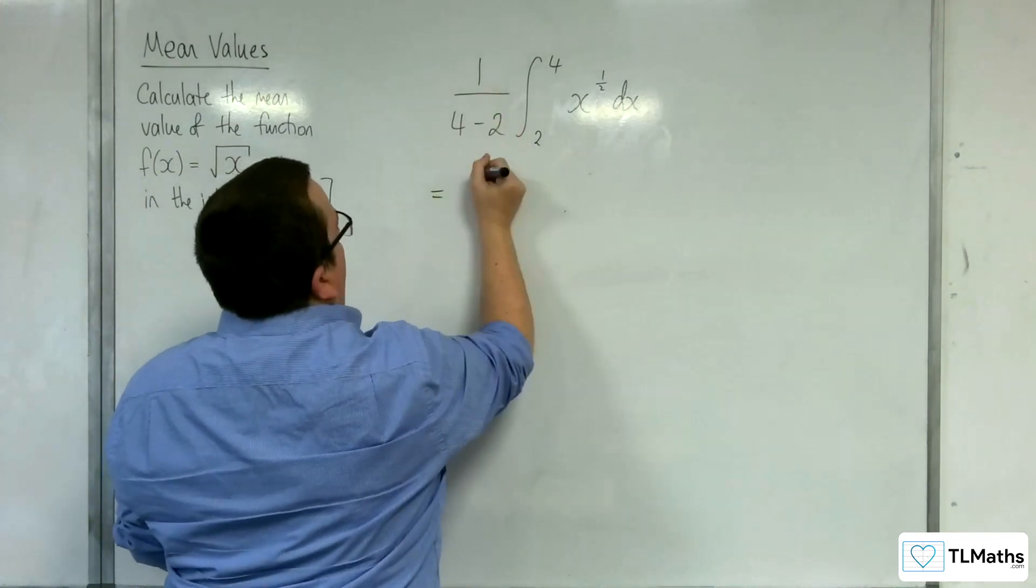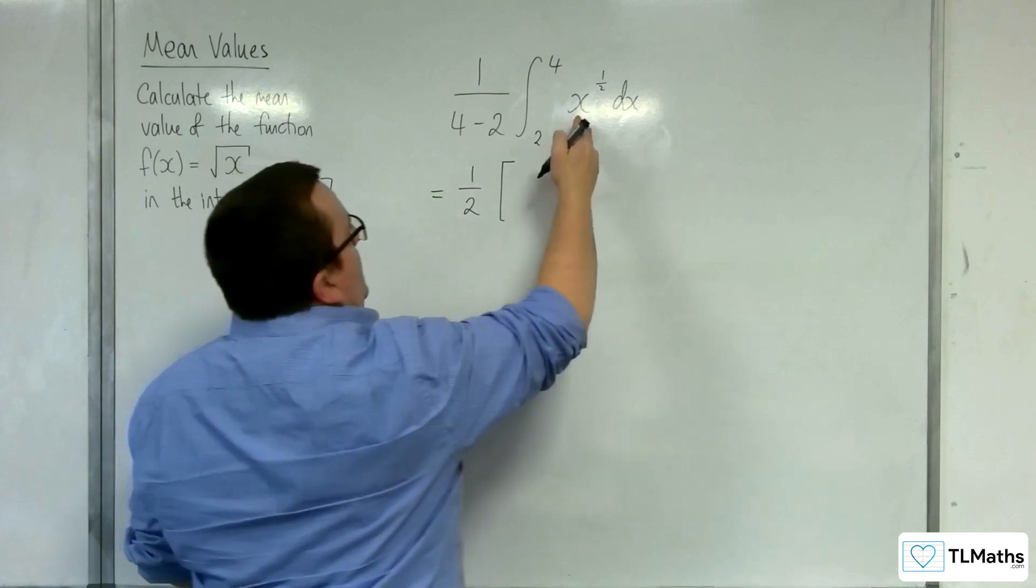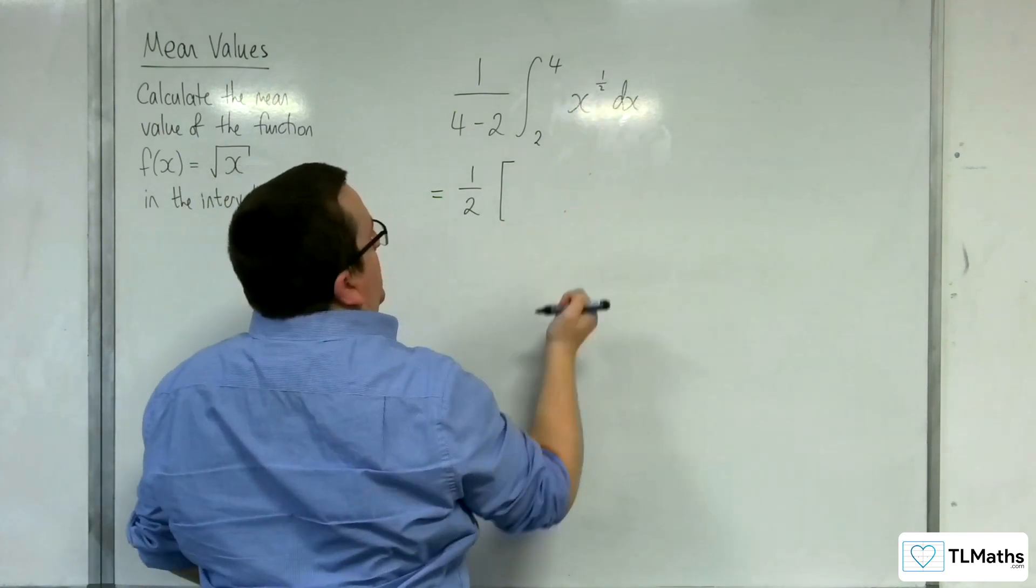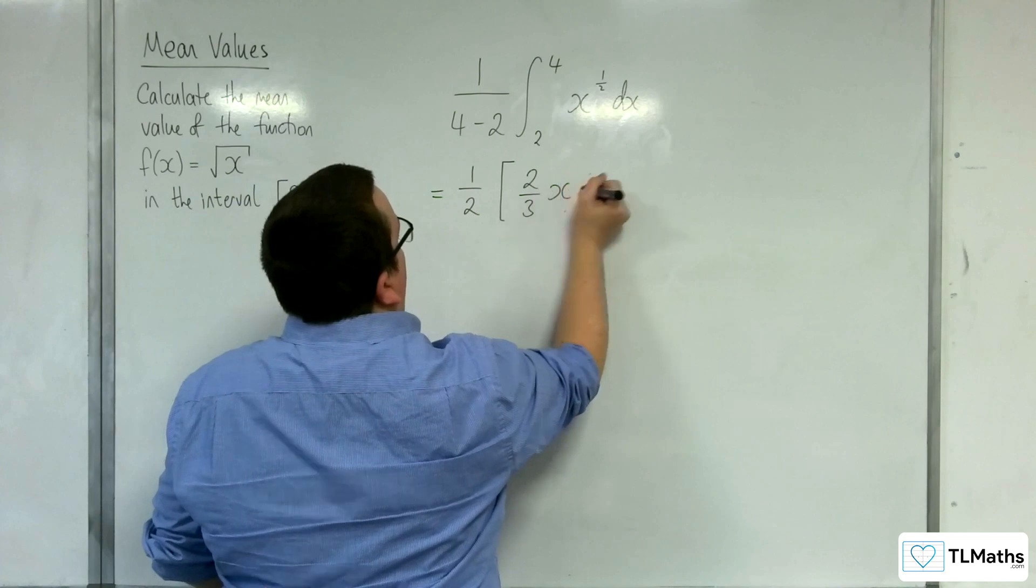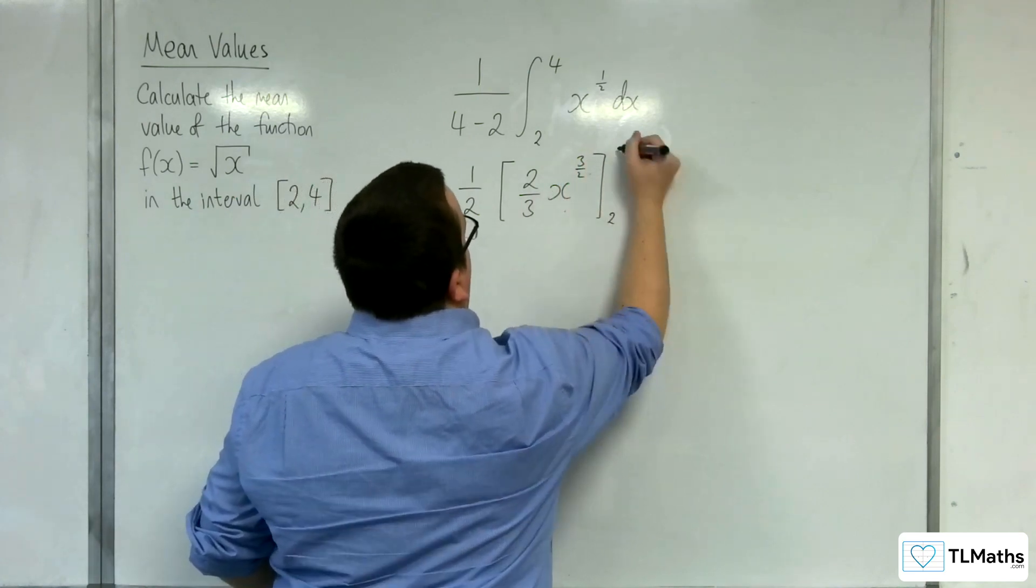So that's just a half. So we have 1 half times by x to the half integrated, add 1 to the power divided by the new power, is 2 thirds x to the 3 halves evaluated between 2 and 4.